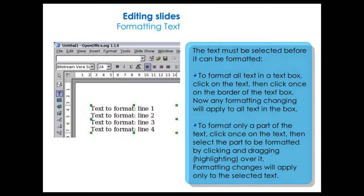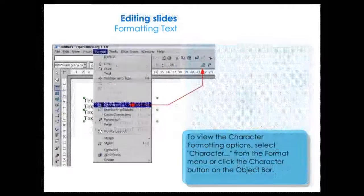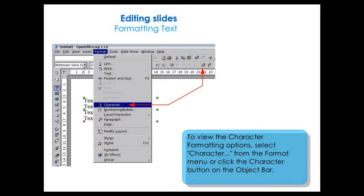The text must be selected before it can be formatted. To format all text in the text box, click on the text, then click once on the border of the text box. Any formatting changes will apply to all text in the box. To format only a part of the text, click once on the text, then select the part to be formatted by clicking and dragging to highlight over it. Formatting changes will apply only to the selected text. To view the character formatting options, select Character from the Format menu or click the character button on the object bar.